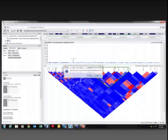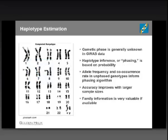Phase is generally unknown in GWAS data — phase refers to which alleles were inherited together from each parent. The process of inferring haplotypes or phasing is based on probability. We know the relative frequency with which each allele occurs and how often they occur together in samples. With a large sample size, we can statistically reconstruct those combinations and probabilistically assign haplotypes to each sample. That accuracy gets better the more samples we have, and family data makes the process a whole lot more accurate.